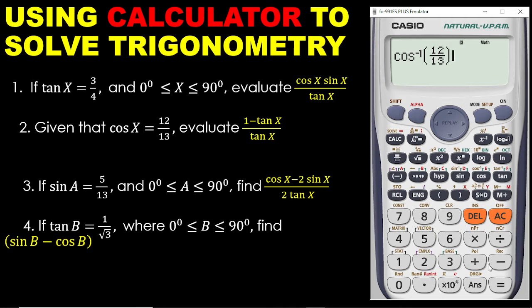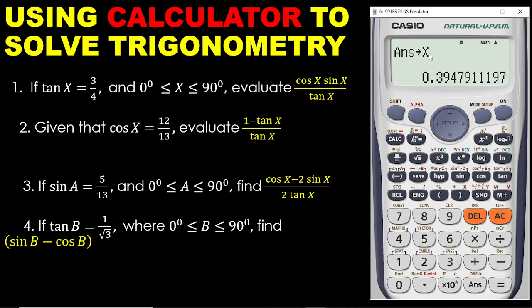Press the equal sign. Once again, after pressing the equal sign, you must save it to one of these letters. The question said cos X, so I am going to save this to X. You press Shift, press Store, and then choose X. This arrow here means my answer has been saved to X.